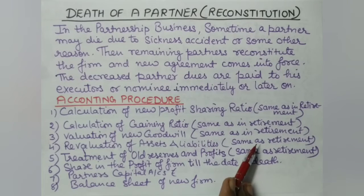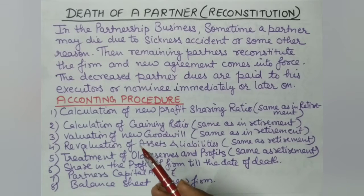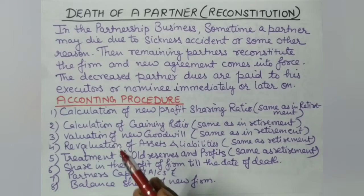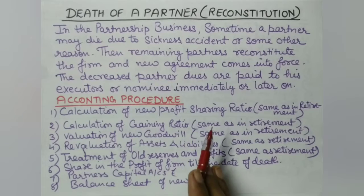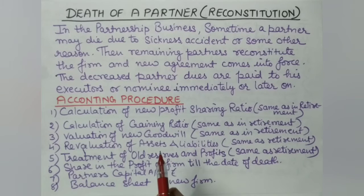Fourth step is revaluation of assets and liabilities — same as in the retirement case. Revaluation account is a very common account prepared in all reconstitution cases — whether it is change in profit sharing ratio, admission, or retirement. The same process is followed here. Assets whose value decreases go to the debit side; assets that increase go to the credit side. Liabilities that increase go to the debit side; liabilities that decrease go to the credit side.